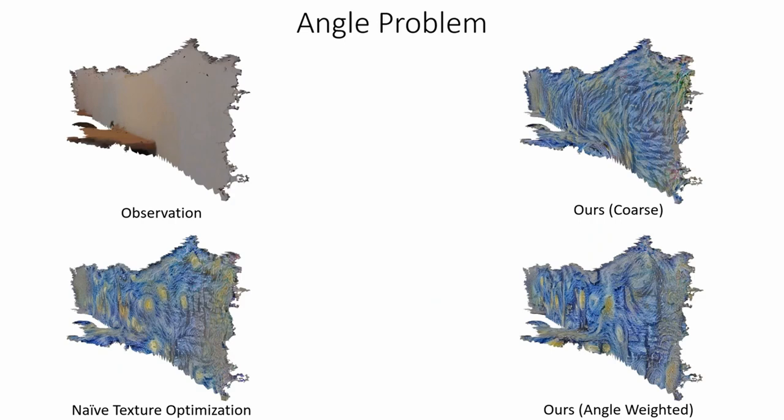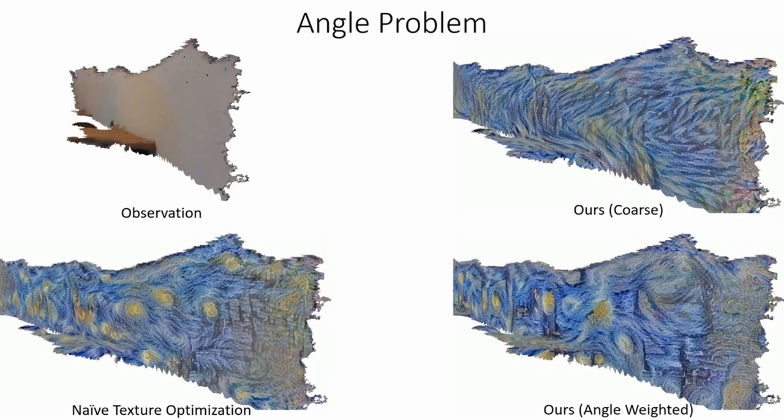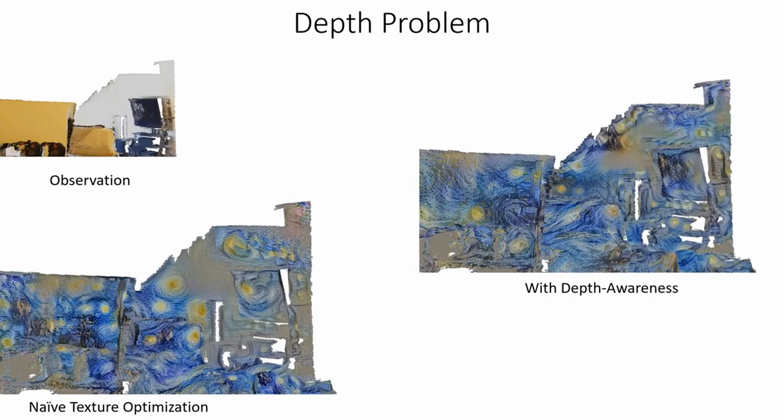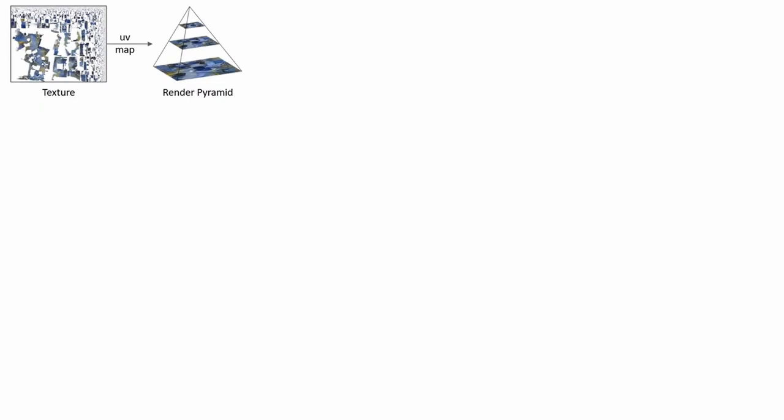When optimizing surfaces from small grazing angles, stylization patterns like the stars are optimized from the perspective of that viewpoint. When viewing the scene from another perspective, these patterns appear stretched out. When optimizing surfaces at different distances, stylization patterns can be equally large even when they are further in the back.